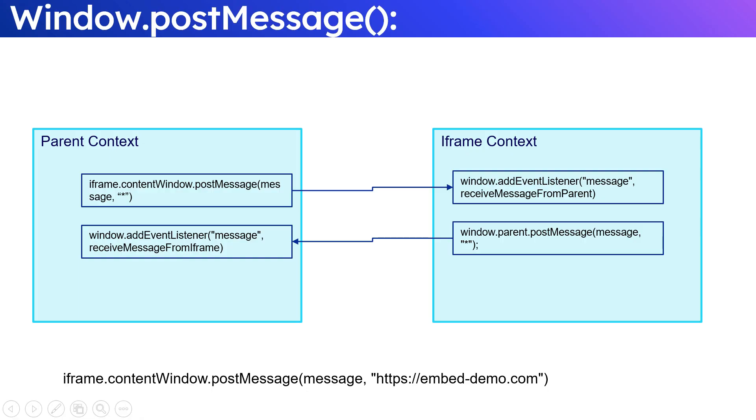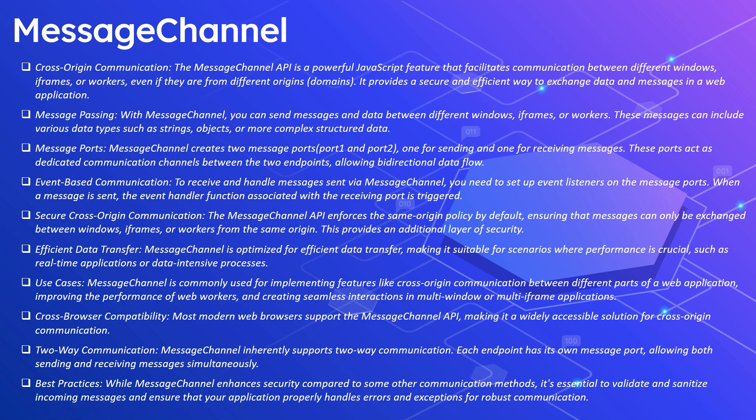The MessageChannel JavaScript API facilitates communication between different windows, iframes, or workers. It provides a secure and efficient way to exchange data and messages in a web application. With MessageChannel, you can send messages and data between different windows, iframes, or workers — including strings, objects, or complex structured data. MessageChannel creates two message ports: port1 and port2, one for sending and one for receiving.